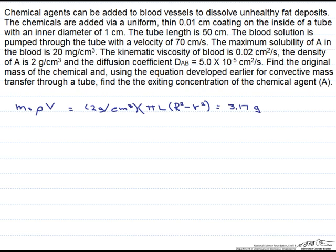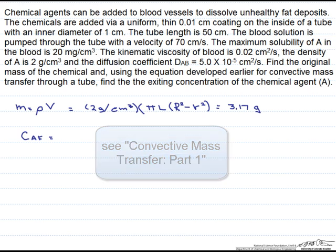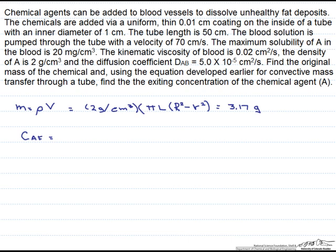Next, we are going to use the equation developed for convective mass transfer to determine the exiting concentration of A. Using a mass balance from a previous screencast, we found that the final concentration — in other words, the concentration leaving the tube — is equal to the surface concentration times 1 minus the exponential of minus 4 times k sub l, which is the mass transfer convective coefficient, times the length of the tube, divided by the velocity of the blood times the inside diameter of the tube.